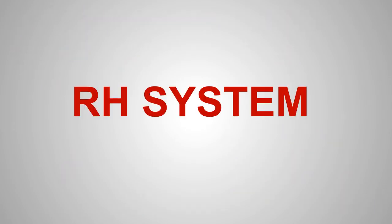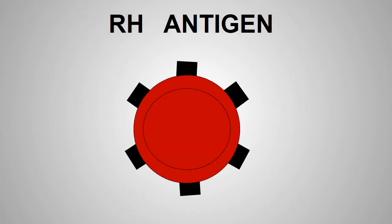The RH factor or RH antigen, named after the rhesus monkey where it was first discovered, is a protein on the surface of the red blood cells.